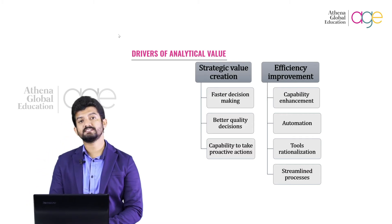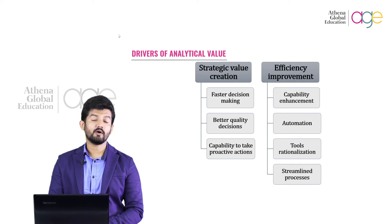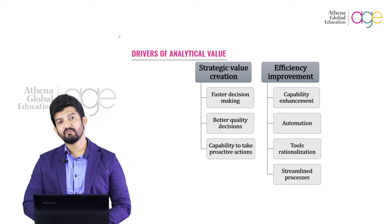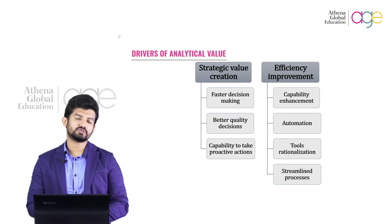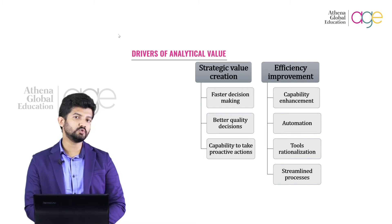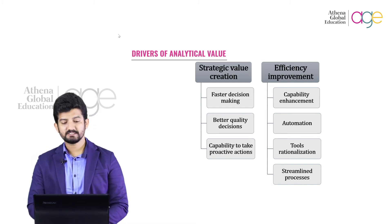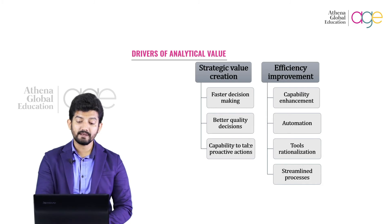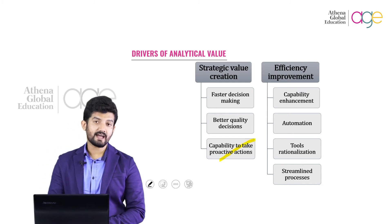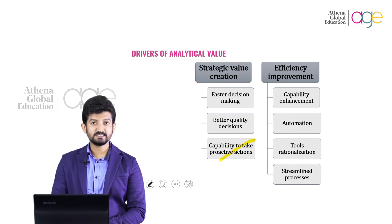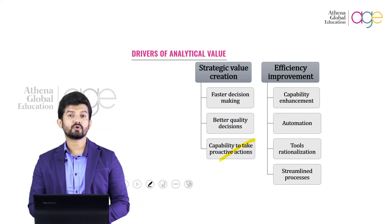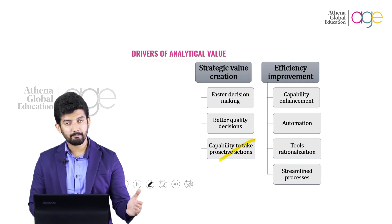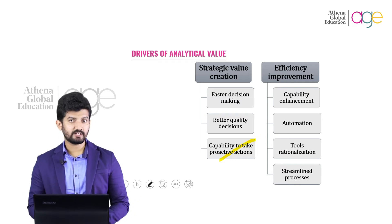Better quality decisions: when we think about quality in the technological sector, we always associate it with Apple. Apple has a very analytics-driven approach within the organization where they use data at its best. The third one is the capability to take proactive actions — you do not just wait for a problem to arise and then solve it. Instead, you try to avoid the problem completely: prevention is better than cure.